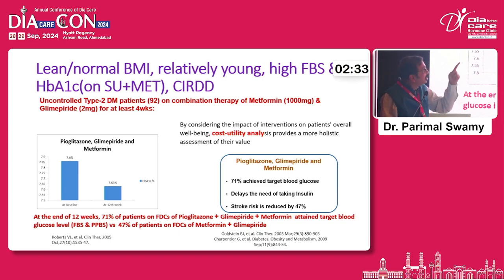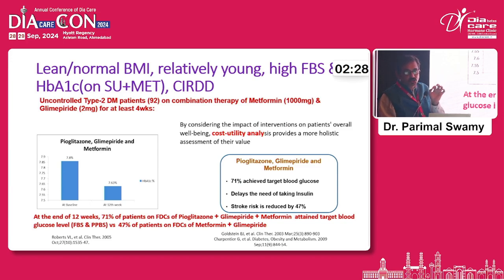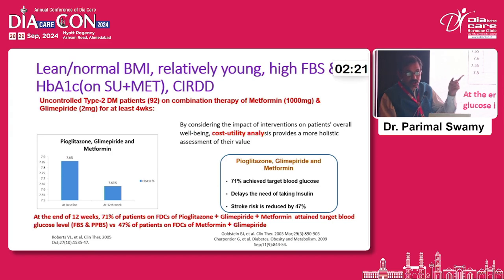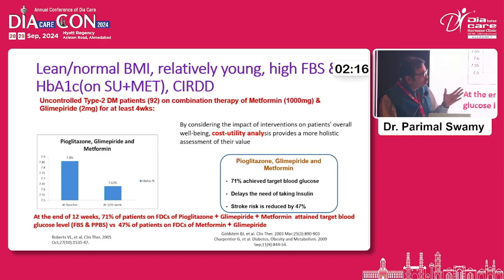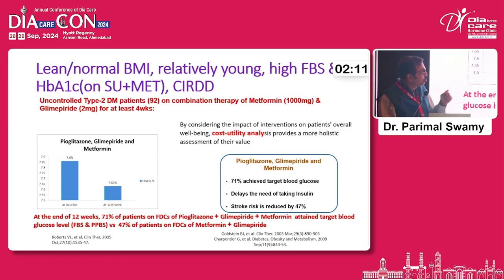You would choose this combination in relatively younger patients, because the biggest concern with pioglitazone in the literature is fracture risk, which is not significant in the age group of 35 to 60 years but increases beyond that. For this particular patient group, cost-utility analysis also shows the combination can reduce stroke risk by almost 47%.